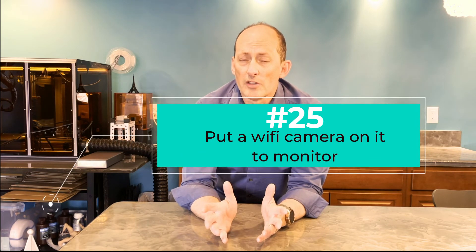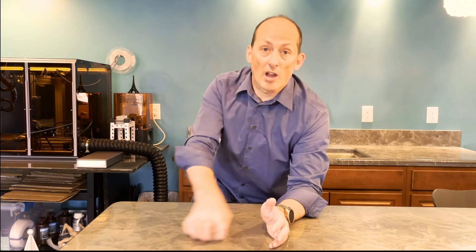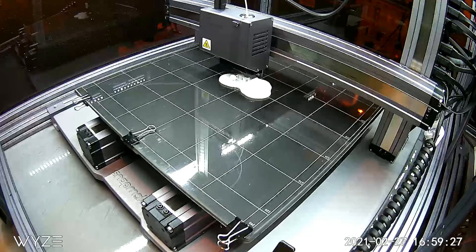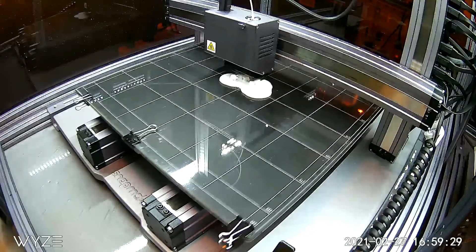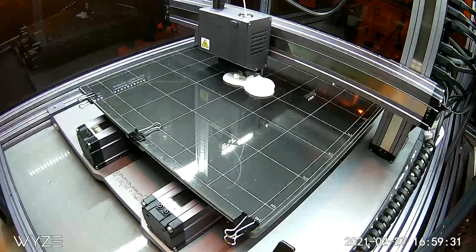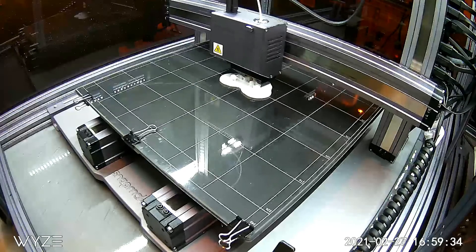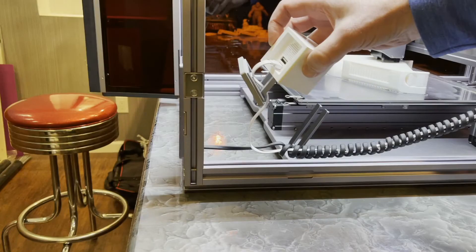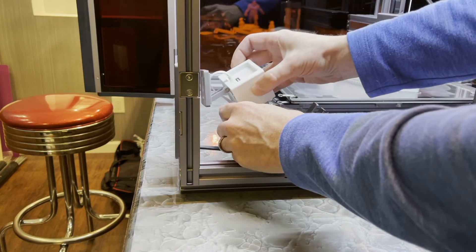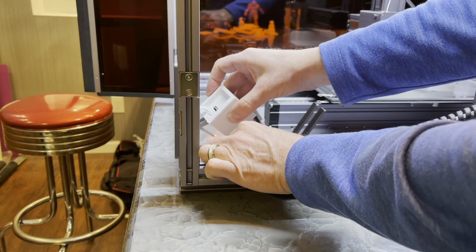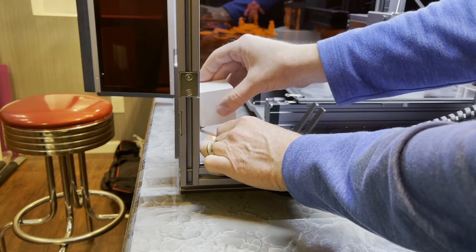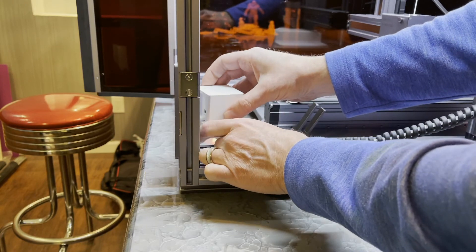One of the things you can do to make sure that your printer is still running properly, even when you're not present, is putting on a camera of some sort, a wi-fi camera that will monitor your printer while you're away. You can both see what's happening as well as hear what's happening. Watch my other video about the Wyze camera that I purchased and installed, which has been fantastic to monitor my printer while I'm away from it. It's my baby monitor.